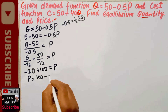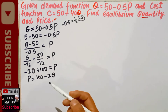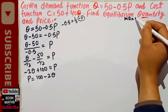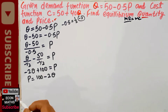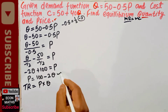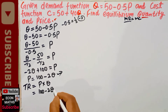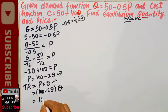Now we have to find the total revenue, because equilibrium occurs where marginal revenue equals marginal cost. For marginal revenue, we first need total revenue. Total revenue equals price times quantity. Substituting our price function, TR = (100 minus 2Q) times Q, which gives us the total revenue function TR = 100Q minus 2Q squared.